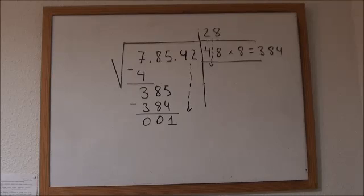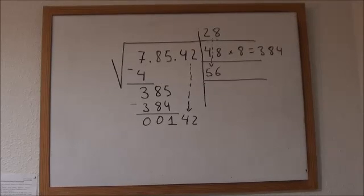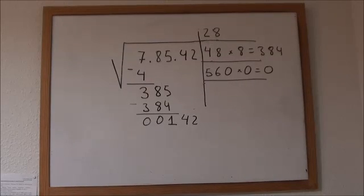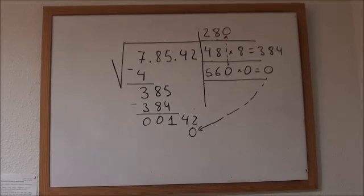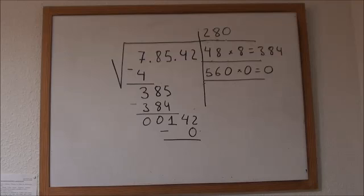42 comes down and 28 gets doubled and goes down as well. And let's find that digit that joined to 56 and multiplied by itself gets the closest to 142, which cannot be other than 0 because even with 1 we will get over. So let's bring it down, subtract, and let's bring it up and join with the 2 and 8 we already had. And the square root of 78,542 is 280.